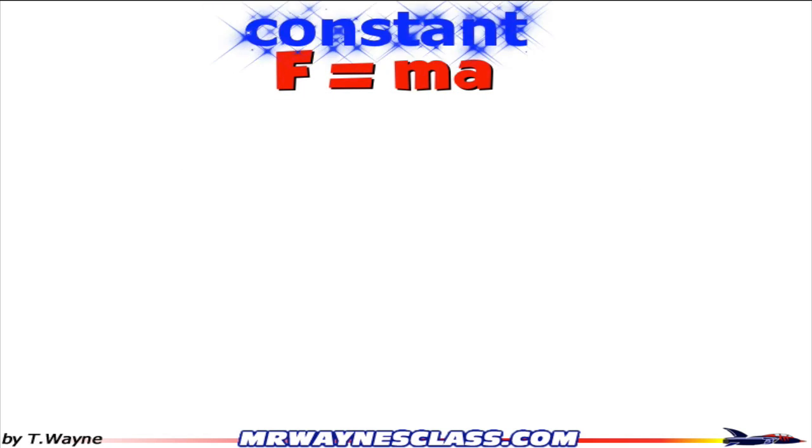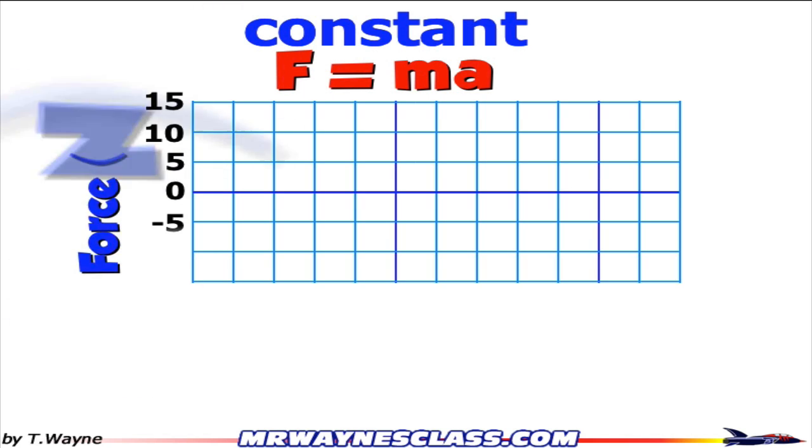So far in what we've looked at, we have an acceleration that's constant. Now, looking at Newton's second law, that means that our force is also constant. So if I was to graph this as a graph of force versus time, or force versus distance, I would get a horizontal line. So here I have a constant force of 10 Newtons.